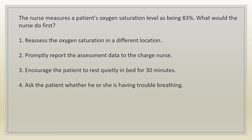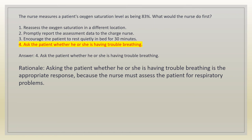The nurse measures a patient's oxygen saturation level as being 83%. What would the nurse do first? 1. Reassess the oxygen saturation in a different location. 2. Promptly report the assessment data to the charge nurse. 3. Encourage the patient to rest quietly in bed for 30 minutes. 4. Ask the patient whether he or she is having trouble breathing. Answer: 4. Ask the patient whether he or she is having trouble breathing. Rationale: the nurse must assess the patient for respiratory problems.